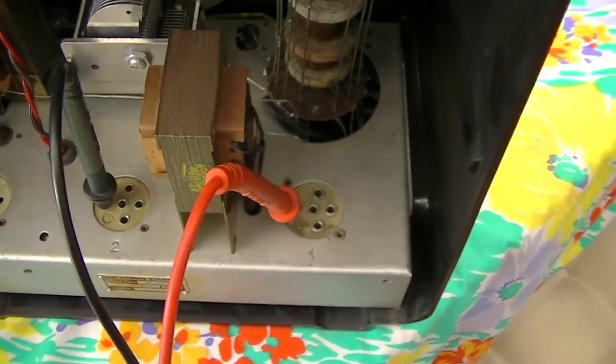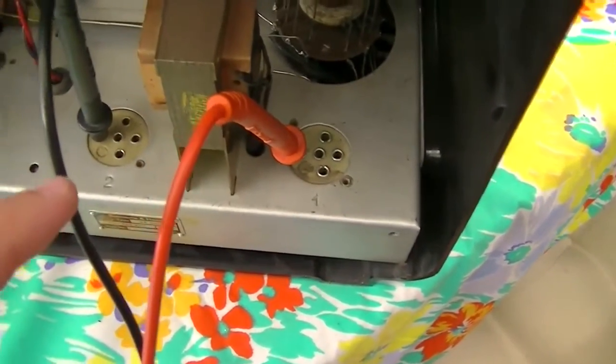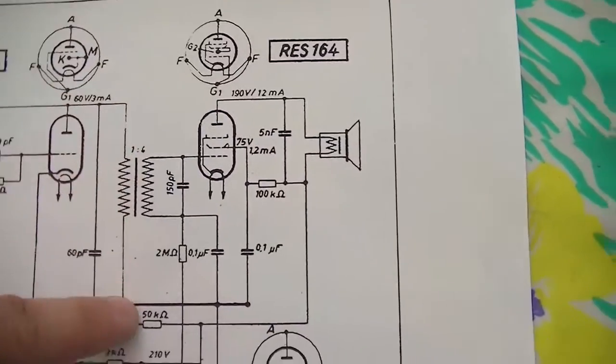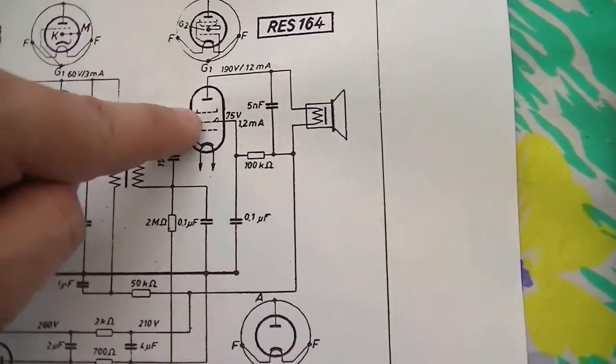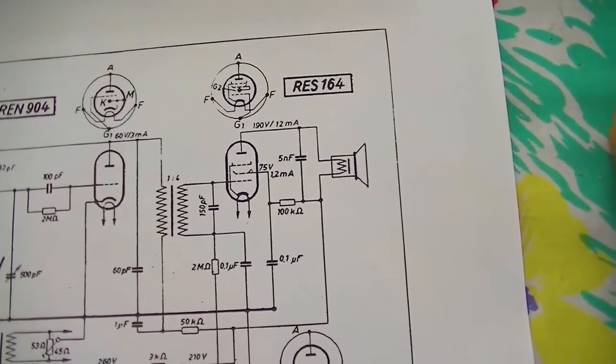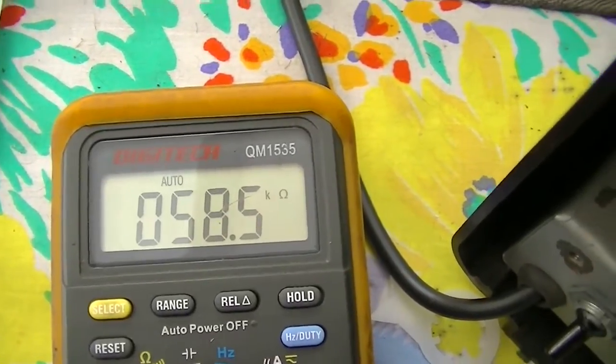All right, here it is. I'm testing out the primary winding: plate of the triode, plate of the pentode. Expecting to see about 50 something k as I previously mentioned, we have got 58.5k.